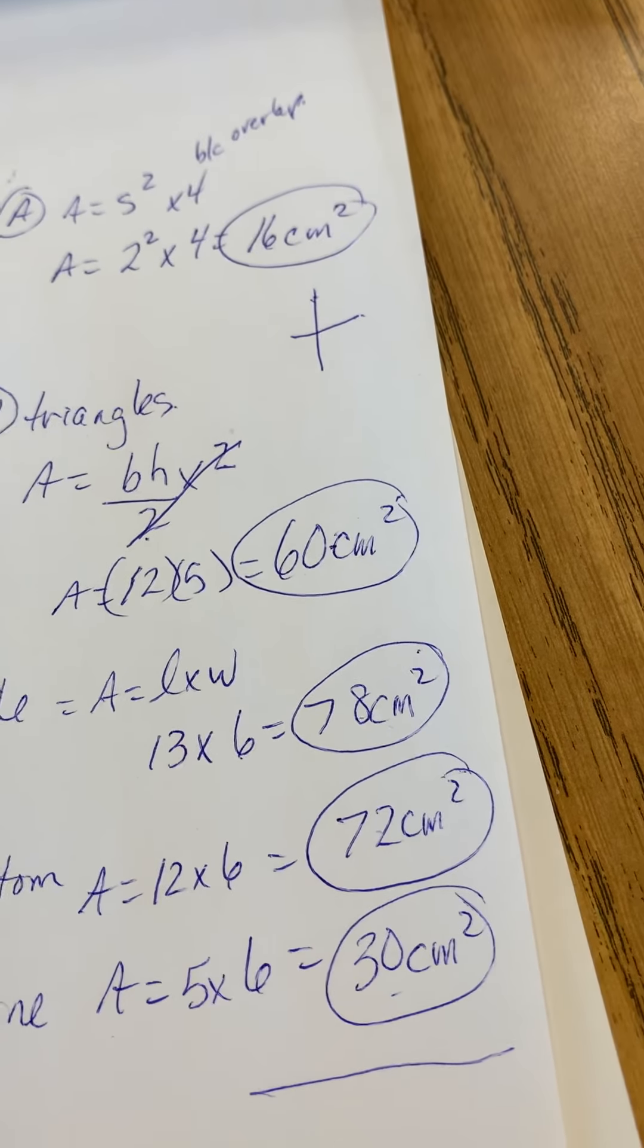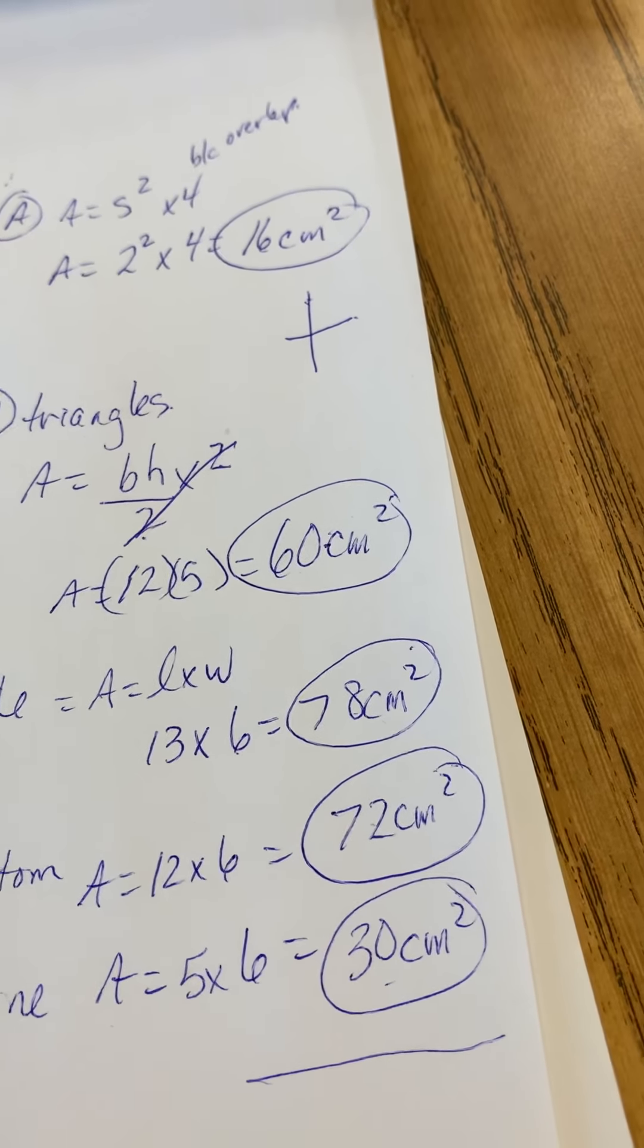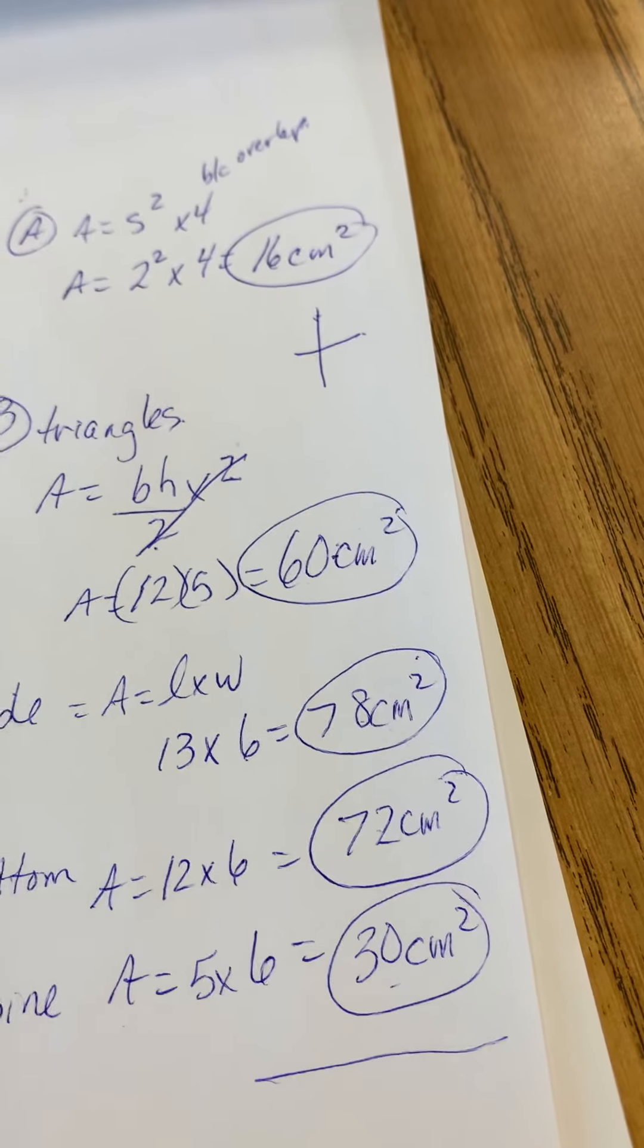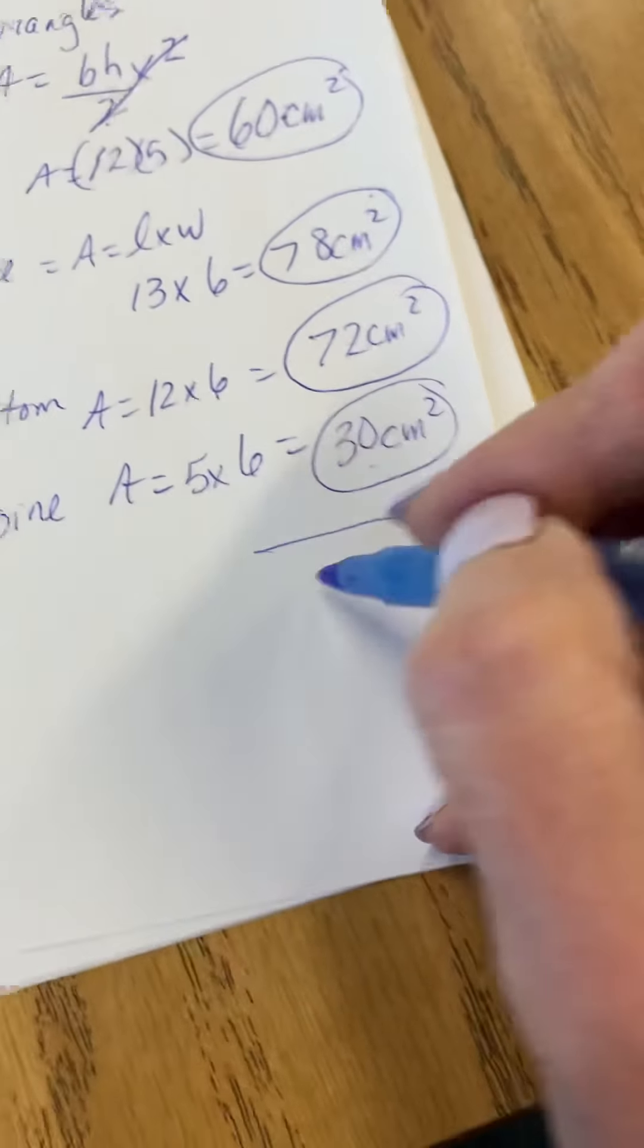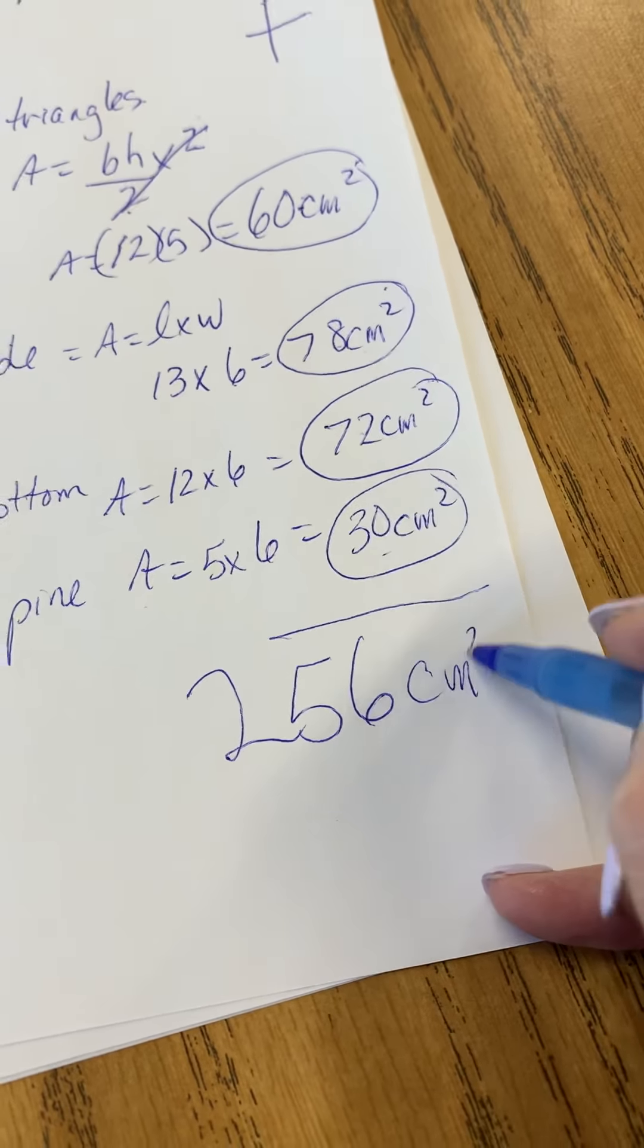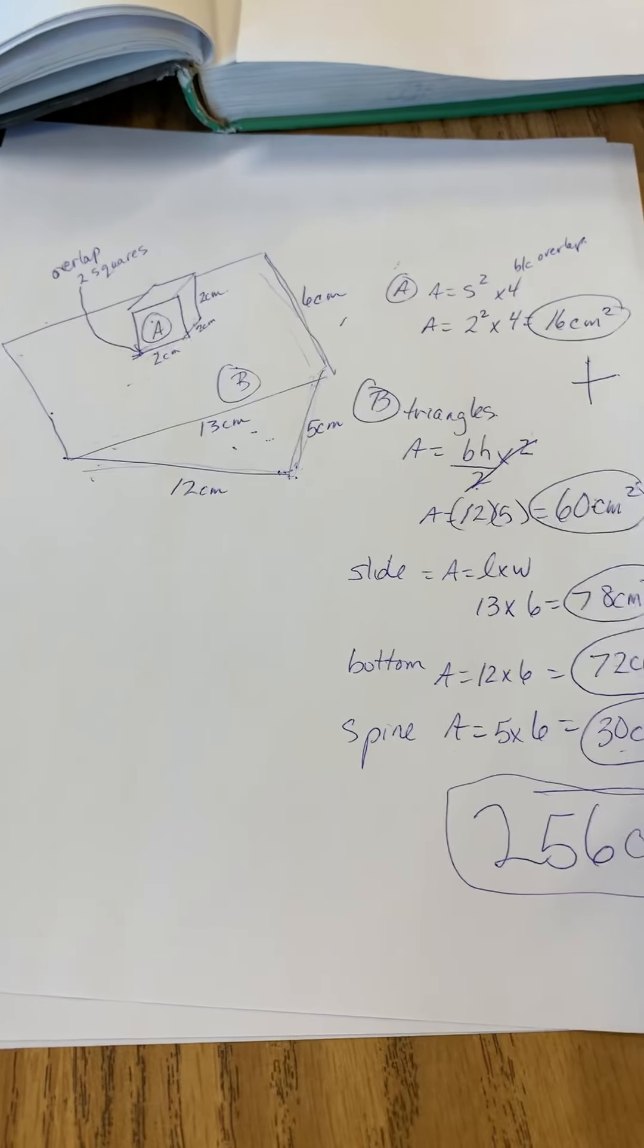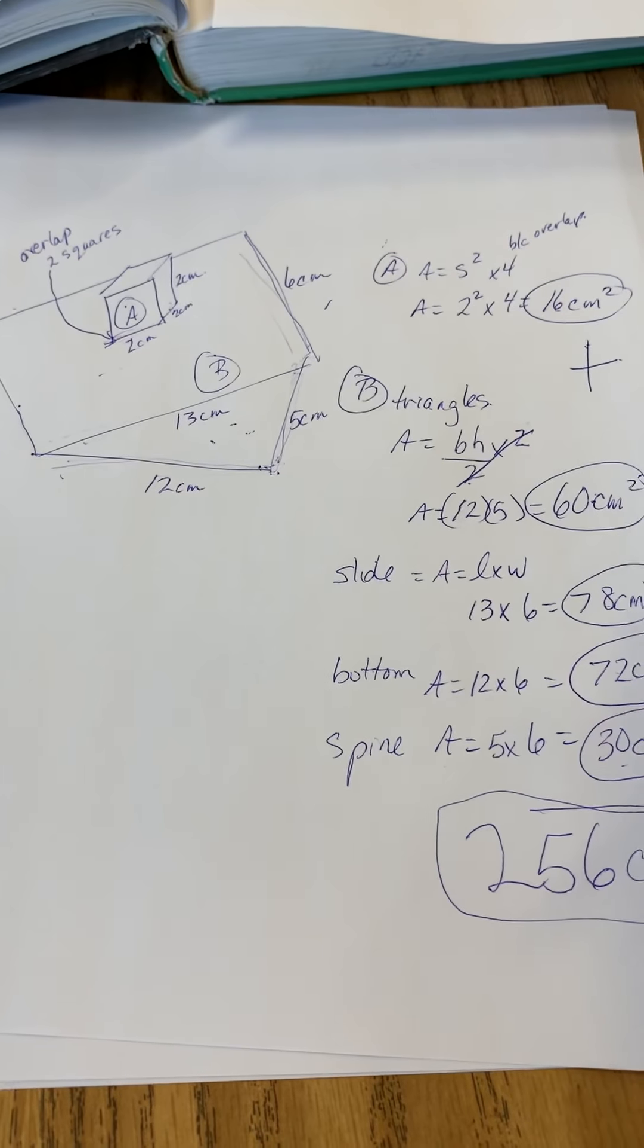Okay, let's add them all up. 16 plus 60 plus 78 plus 72 plus 30, and lo and behold we get the right answer, 256 centimeters squared.